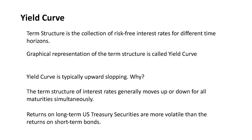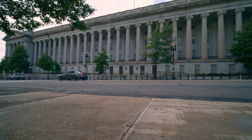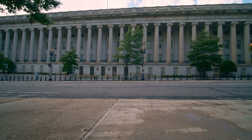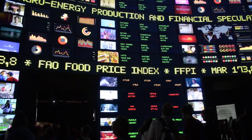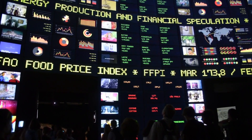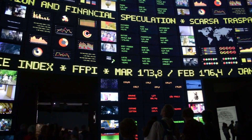Another important point is that the term structure of interest rates generally moves up or down for all maturities simultaneously. This means that if there is a sudden change in short-term interest rates, long-term interest rates are likely to be affected as well. In fact, for U.S. Treasury securities, 99% of the variance in returns at any maturity is related to shifts in the entire term structure. This is in sharp contrast to stocks, where the return of a specific stock largely depends on stock-specific news or fundamentals.